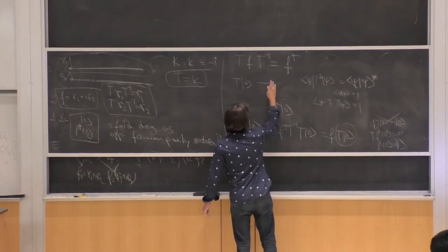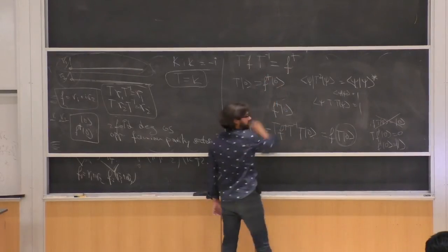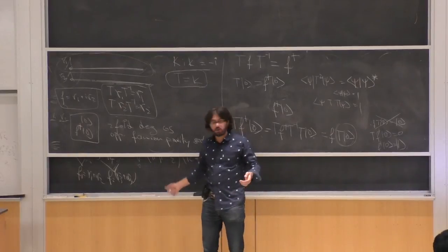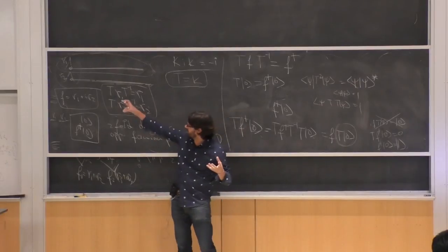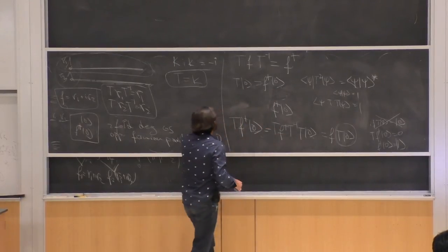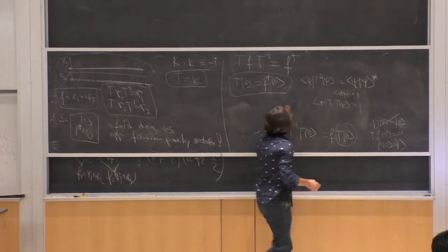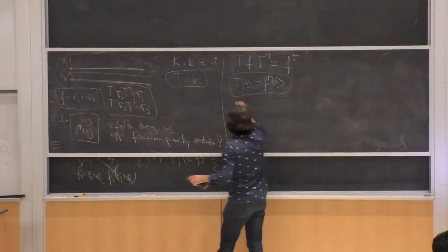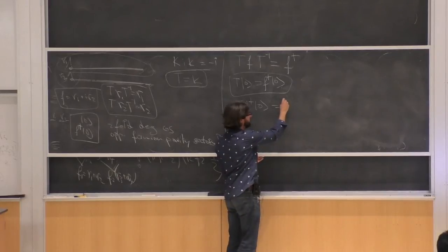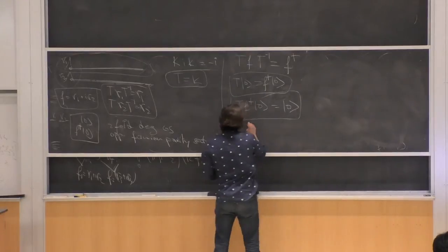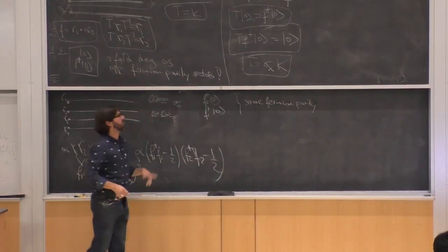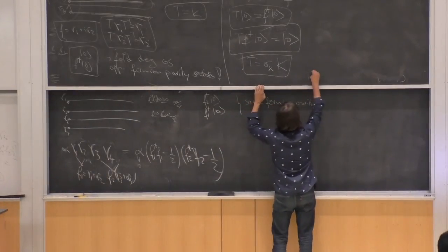This is always true for any ground state. So time reversal when acting on the edge Hilbert space gives just particle-hole conjugation — it acts as F†. On the two-state Hilbert space, T acts as sigma_x times complex conjugation. And T²=1, because sigma_x²=1. So in the two-Majorana case, T acts as sigma_x*K on the edge.